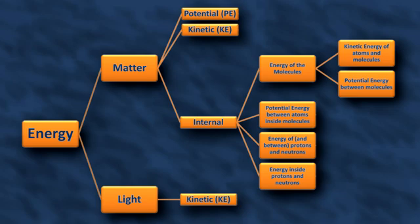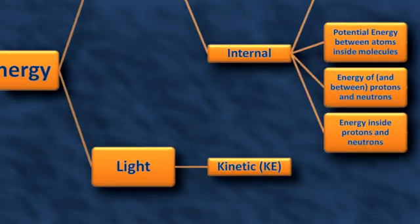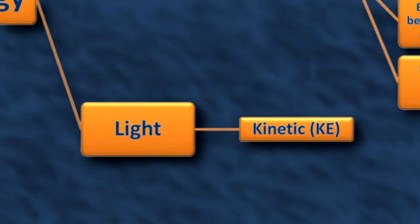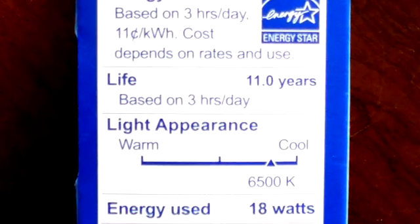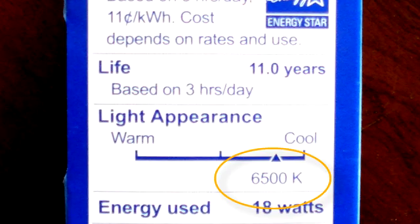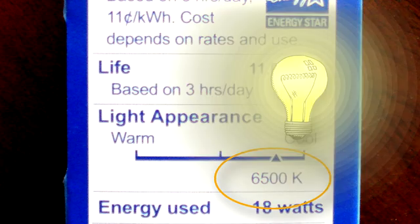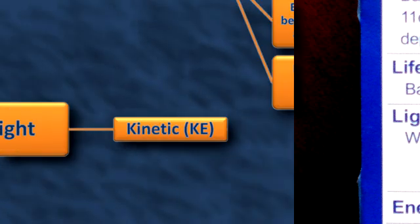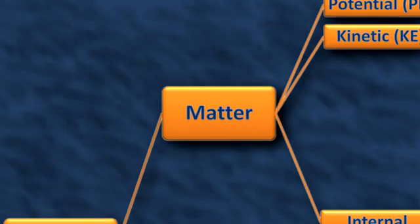First, let's review a little. In my 'What is Energy' video, there was a concept tree that looked something like this. There are all sorts of different types of energy. Light is basically just pure kinetic energy, but light doesn't have temperature. Sure, you might see a label like this on a box of bulbs, but that's not the temperature of light — it's just the temperature of the metal filament that would naturally emit that kind of light. Without matter, the concept of temperature doesn't even make sense.